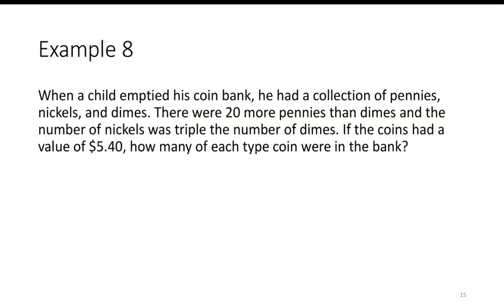When a child emptied his coin bank, he had a collection of pennies, nickels, and dimes. There were 20 more pennies than dimes, and the number of nickels was triple the number of dimes. If the coins had a value of $5.40, how many of each type were in the bank?